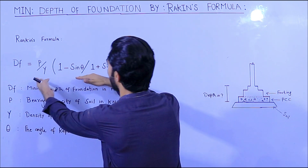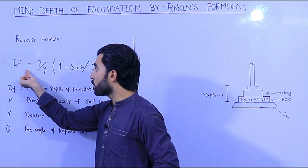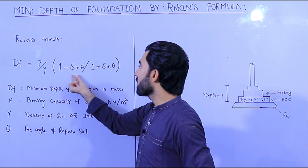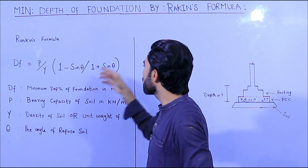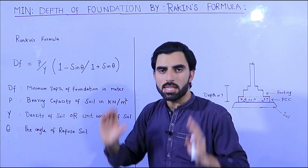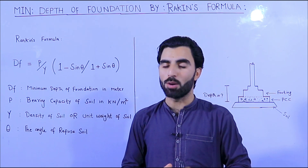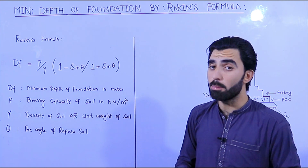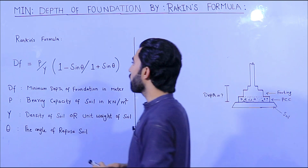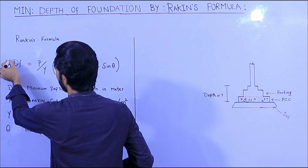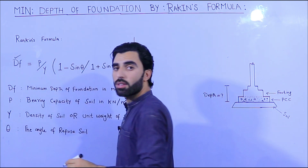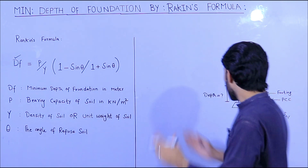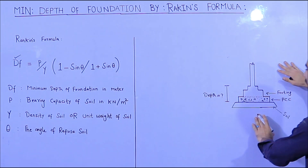As you can see, this is Rankine's formula: df = (p / γ) × ((1 − sin θ) / (1 + sin θ)). This is the simple formula by which you can find the minimum depth of foundation. Here, df is the minimum depth of foundation in meters.